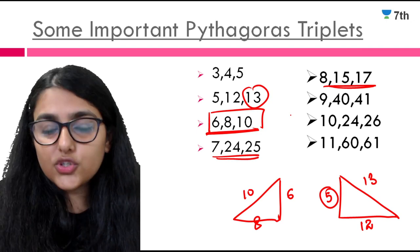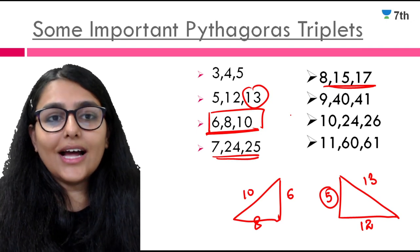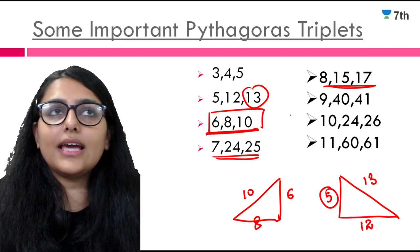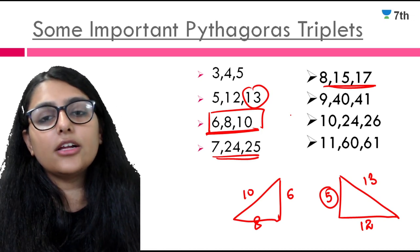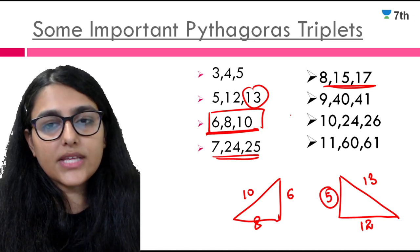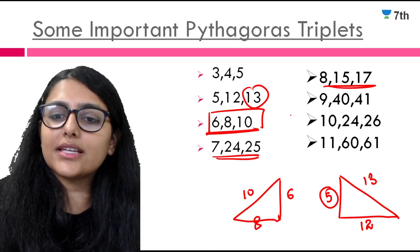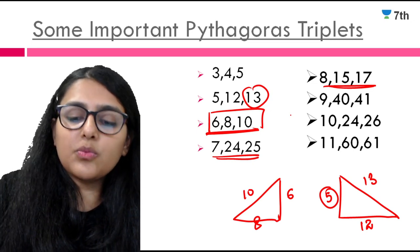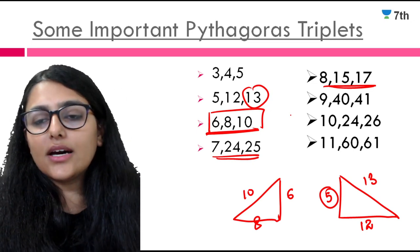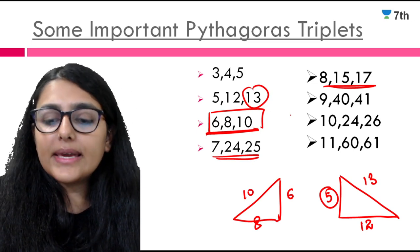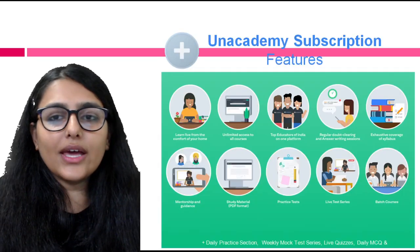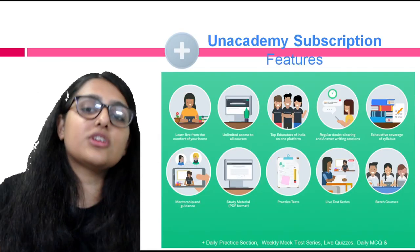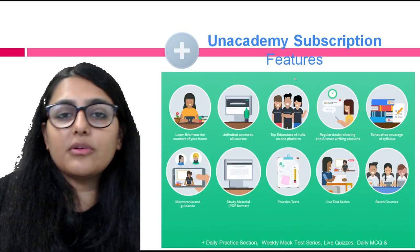That's all in this chapter. The major properties covered were: angle sum property, exterior angle property, sum of sides of a triangle, and the Pythagoras property. Practice more questions and complete your NCRT book. I hope the basics are now clear to you after watching this video.